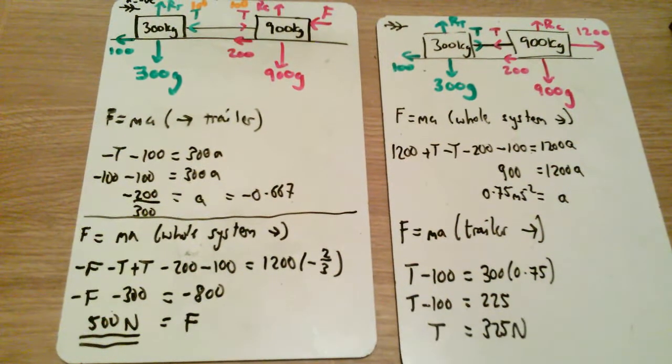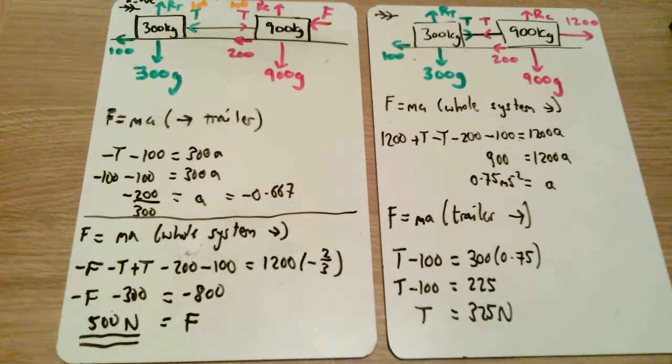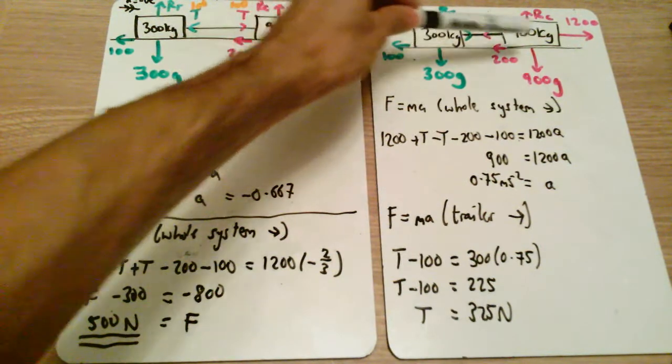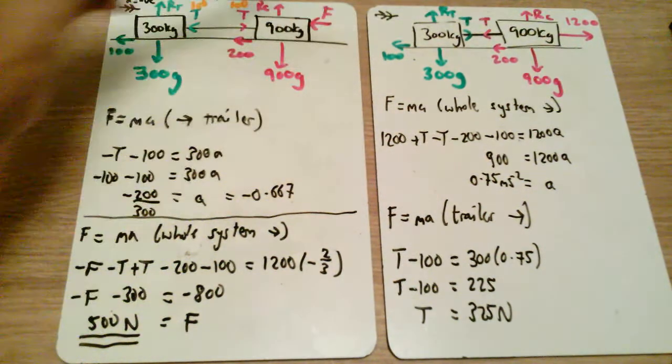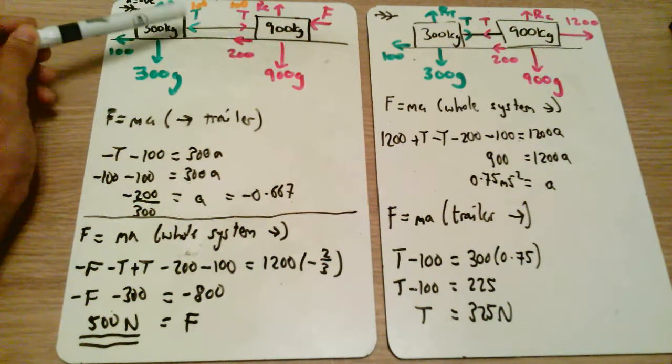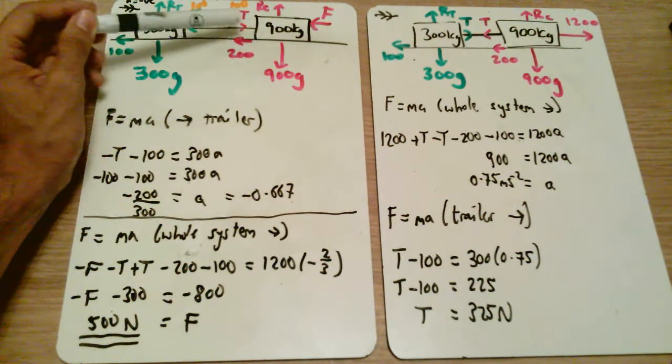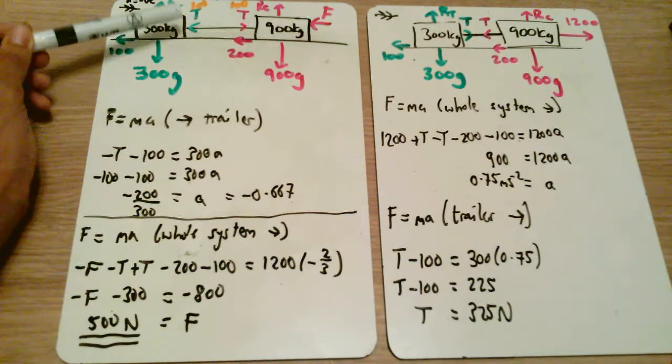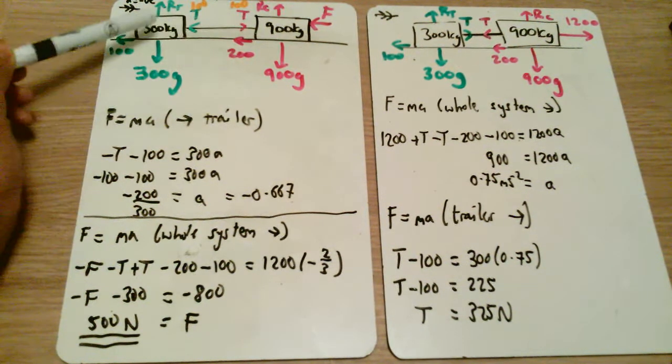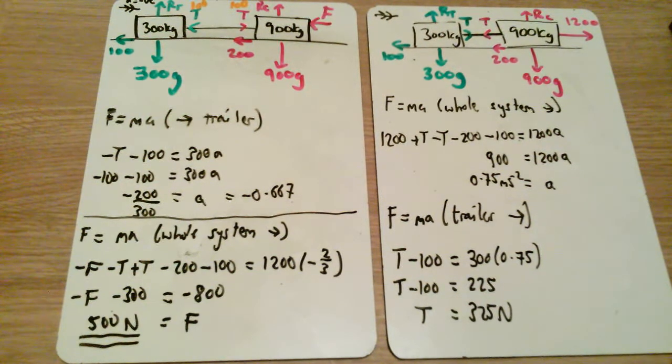So we can see here the key difference is that when something is being pulled, the trailer is pulled forward and the car feels resistance from behind. If something is braking, this vehicle wants to keep going forward so it pushes forward into the car, whereas this one feels resistance from the car not letting it move forward. I hope that's made sense. If it hasn't, please comment below or please let me know.